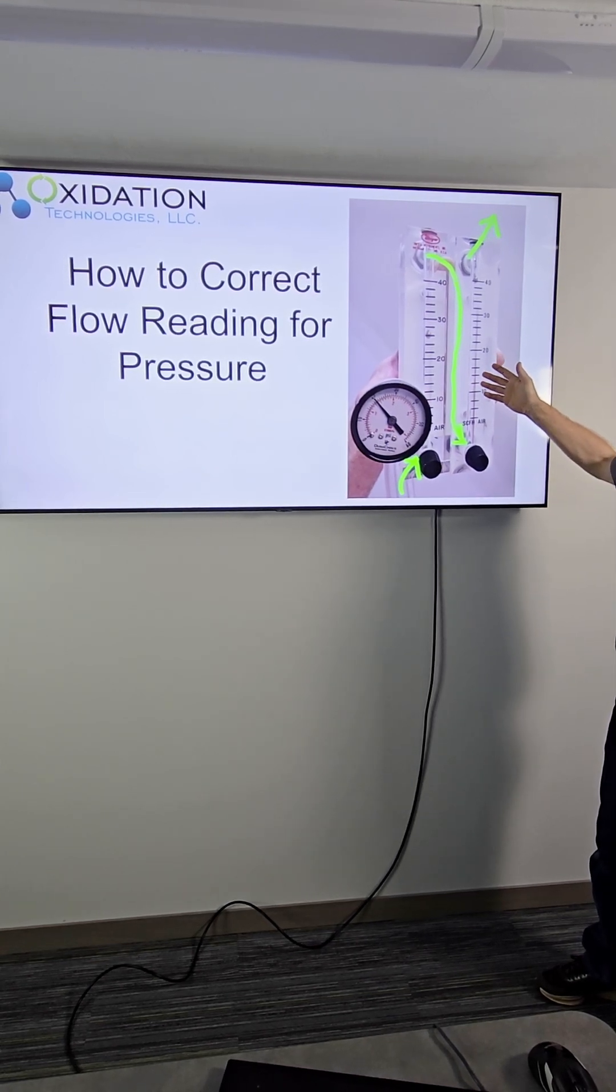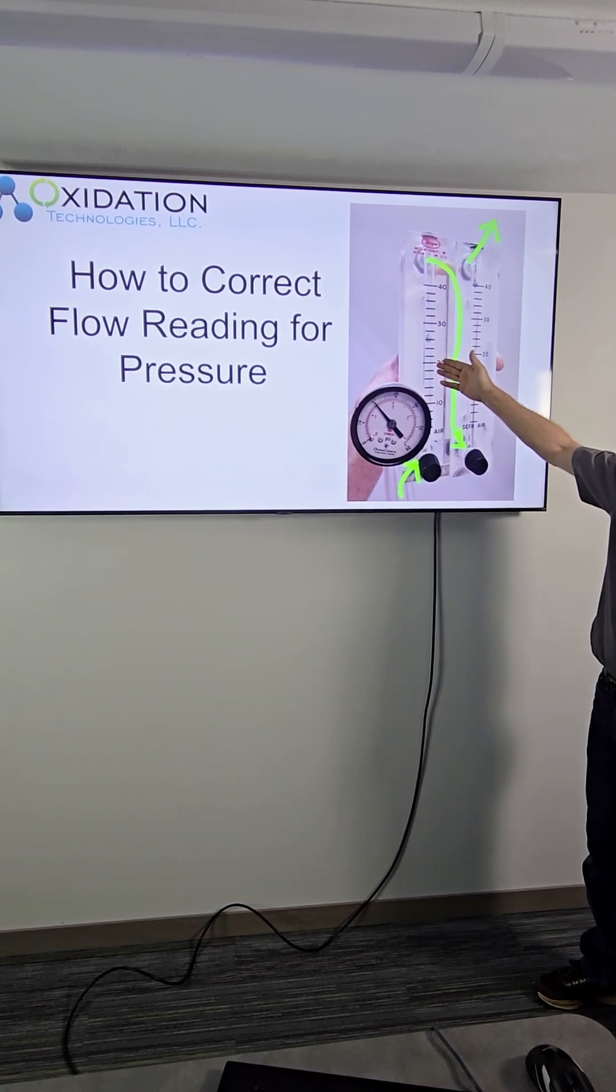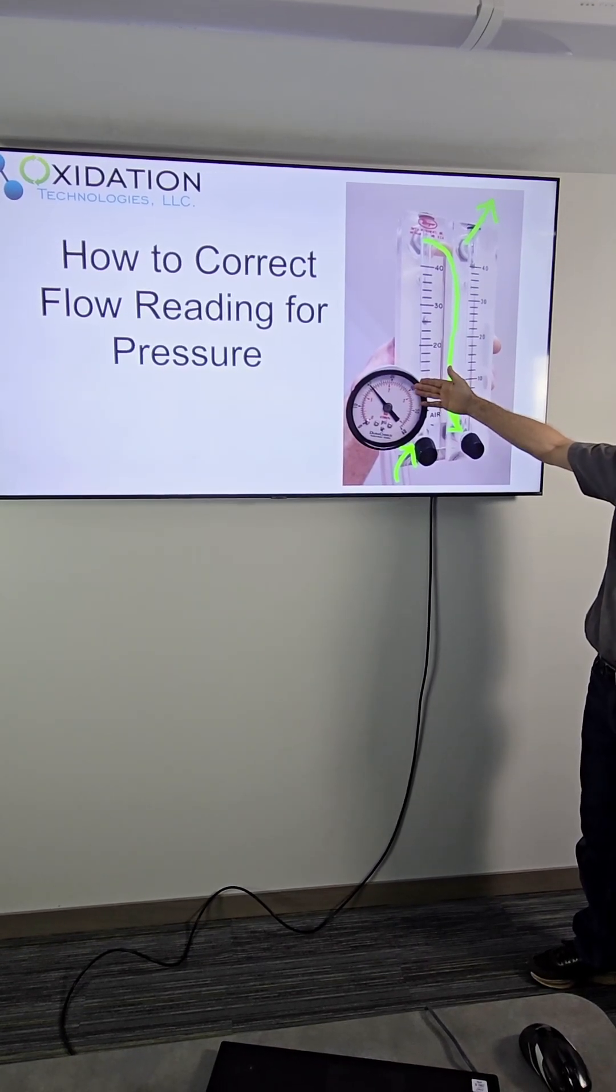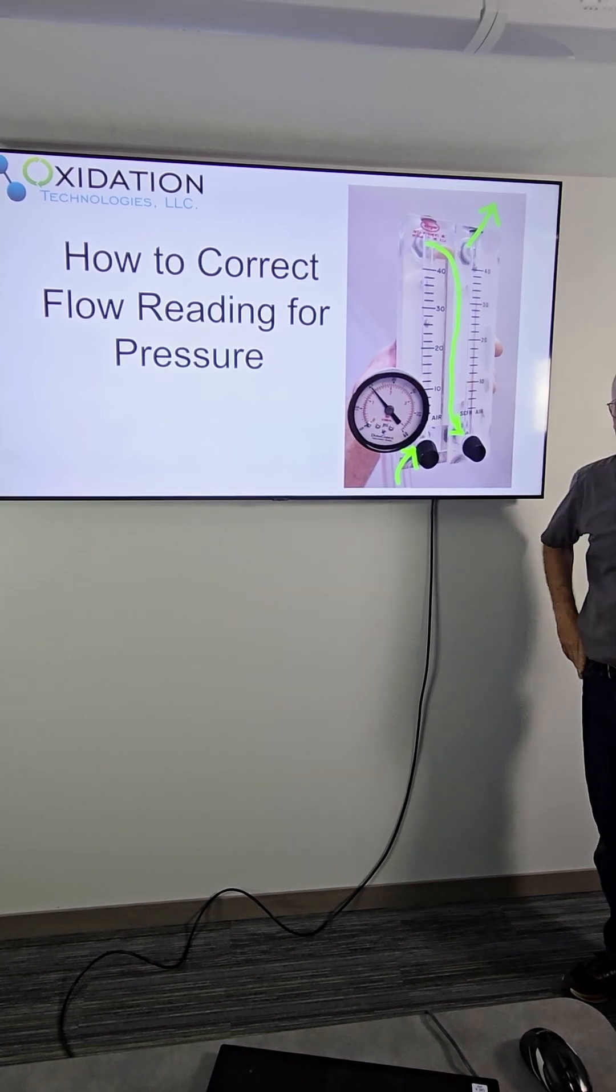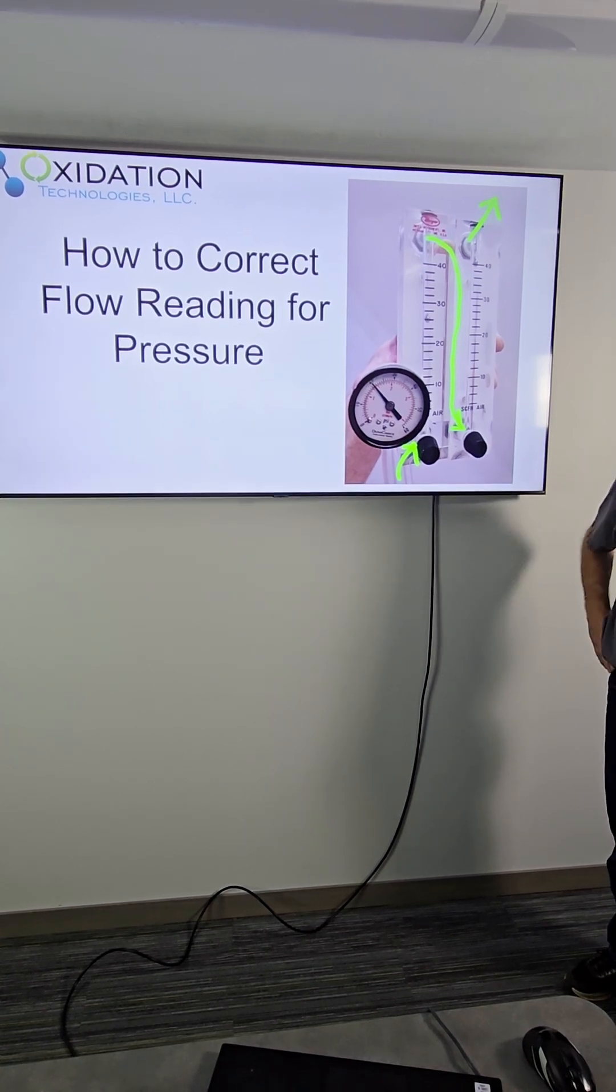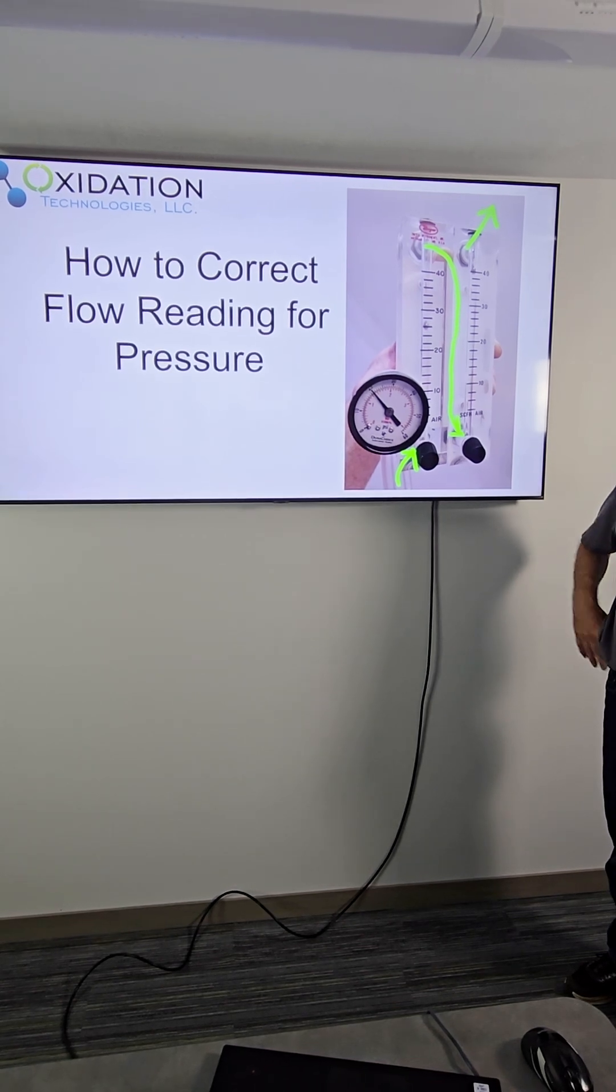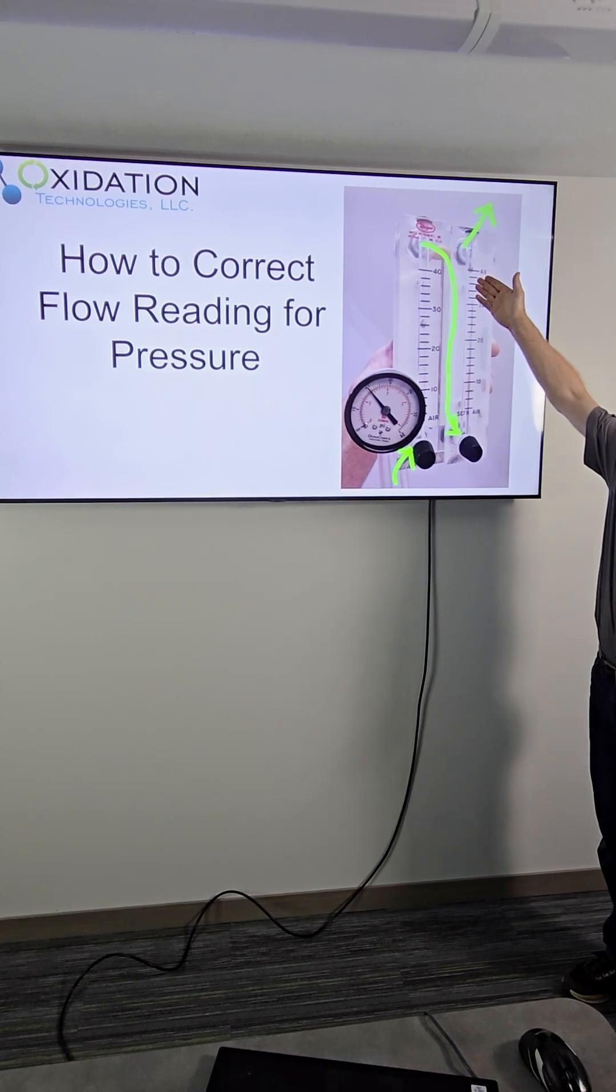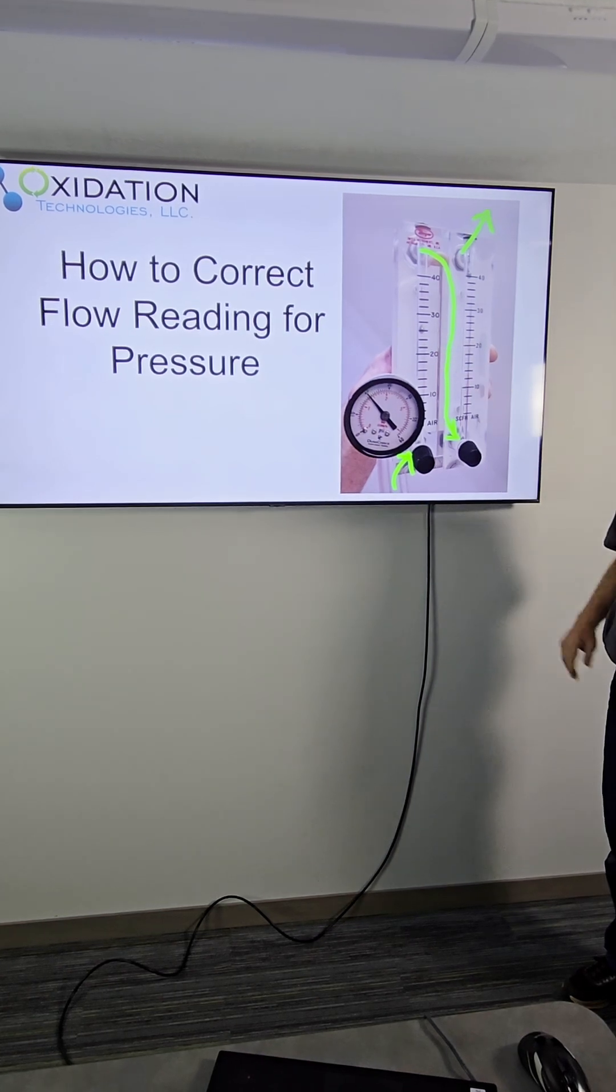They're both correct but when you're measuring gas under pressure you need to compensate, there's a calculation to correct for pressure. You can get flow meters that are already calibrated for a specific pressure. The flow meters that we use here at Oxidation Technologies, it's a range of pressures. They're all calibrated for atmospheric. So this one is giving you a correct reading. This one can be used just fine as long as we correct for pressure.